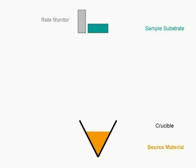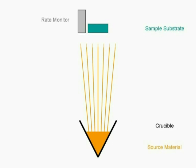Thermal evaporators work by passing current through a crucible containing the source material. Ohmic heating increases the temperature until, at the evaporation power, the material in the crucible changes phase to a gas — it evaporates.